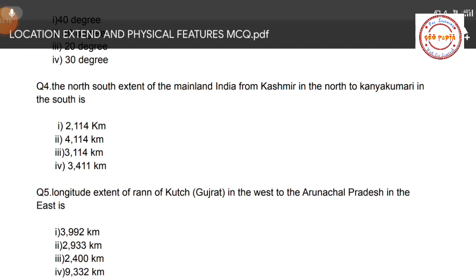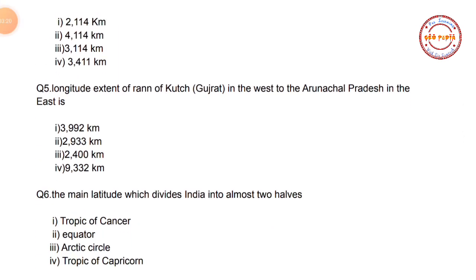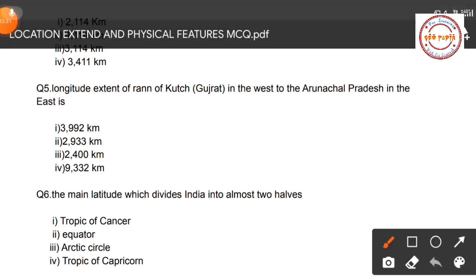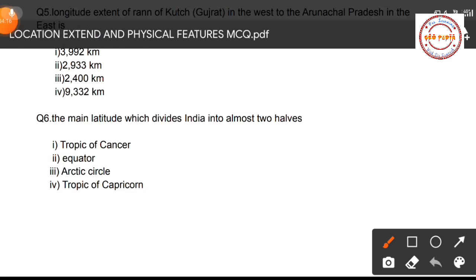Question number five: What is the longitudinal extent from Gujarat in the west to Arunachal Pradesh in the east, in kilometers? Options are: 3992 km, 2933 km, 2400 km, and 9332 km. The correct option is Option 2 — 2933 km from Gujarat to Arunachal Pradesh.